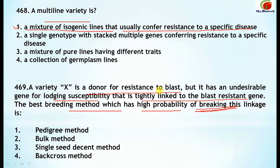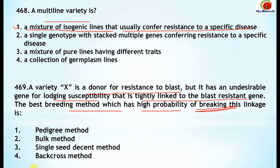The variety is a donor for resistance to blast, but it is linked to the gene for lodging susceptibility — there is tight linkage between these two. The best method with the high probability of breaking this linkage is the backcross method. This is the correct option.